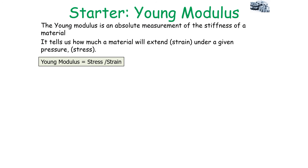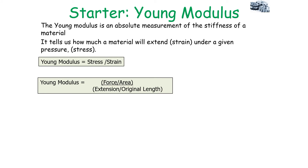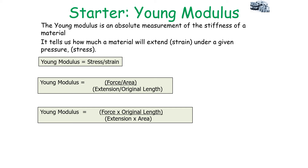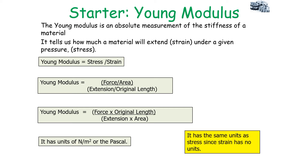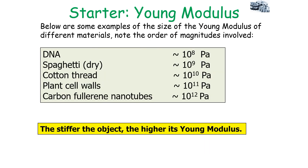The Young Modulus is an absolute measurement of the stiffness of a material — it tells us how much a material will extend under a given pressure. Young Modulus equals stress over strain, which expands to force times original length over extension times area. The unit is newtons per metre squared or the pascal, the same as stress since strain is dimensionless. Examples range from DNA at around 10⁸ Pa to carbon fullerene nanotubes at 10¹² Pa — the stiffer the object, the higher its Young Modulus.